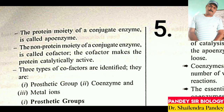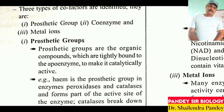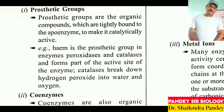There are three types of co-factors identified: prosthetic group, co-enzyme, and metal ion. Prosthetic groups are organic compounds which are tightly bound to the apoenzyme to make it catalytically active. For example, heme is the prosthetic group in the enzyme peroxidase and catalase, forming part of the active site. Catalase breaks down hydrogen peroxide into water and oxygen.